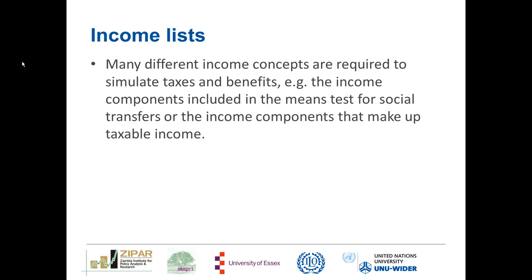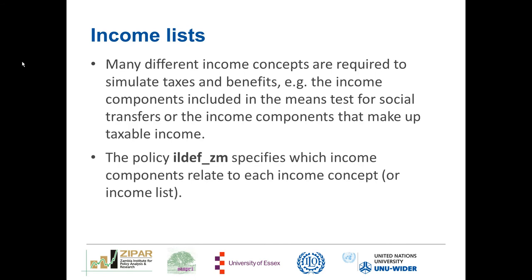Our third definitional policy is what is known as income lists or income concepts. An income list is an aggregate of several variables which are either added or subtracted to build that variable. It is important to remember that many different income concepts are required to simulate taxes and benefits — for example the income components included in the means test for a social transfer, or the income components that make up taxable income. The policy ILL_DEF_ZM specifies which income components relate to each income concept or income list, and it should not be necessary to amend this policy very often.